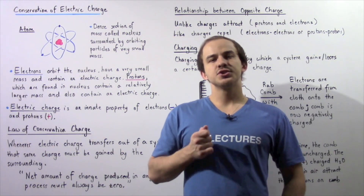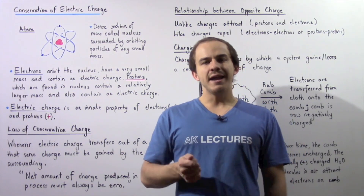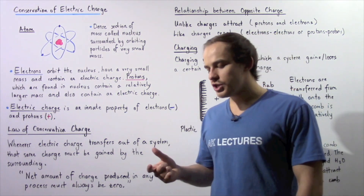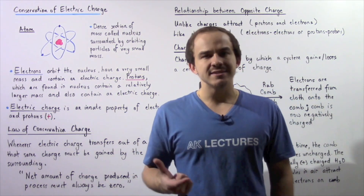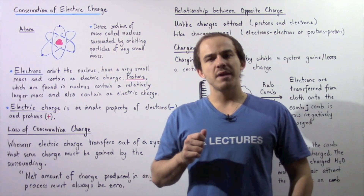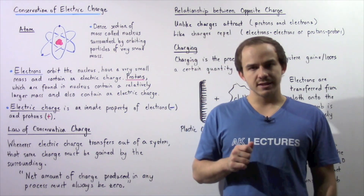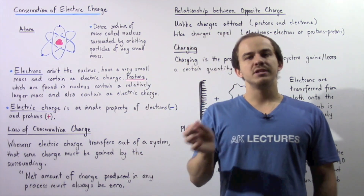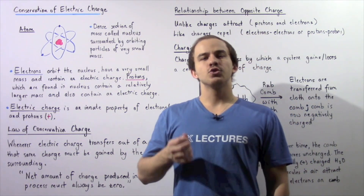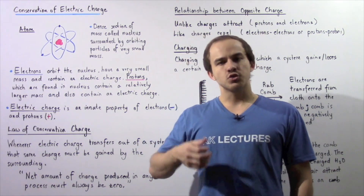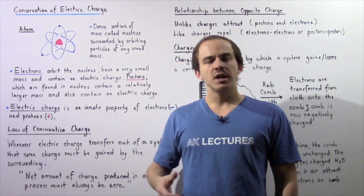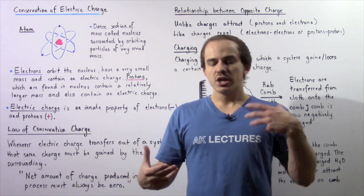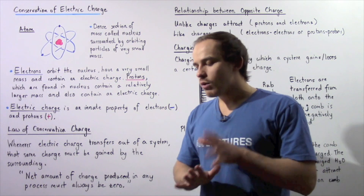When we discussed the conservation of energy, we stated that the total quantity of energy in the universe, in an isolated system, always remains constant. So that basically implies that energy cannot be destroyed and it cannot be created. Energy is only transformed from one type to another type, from one system to another system.